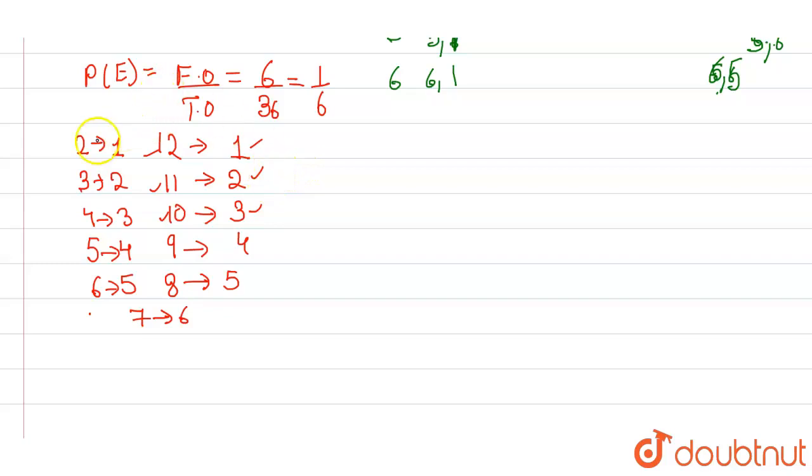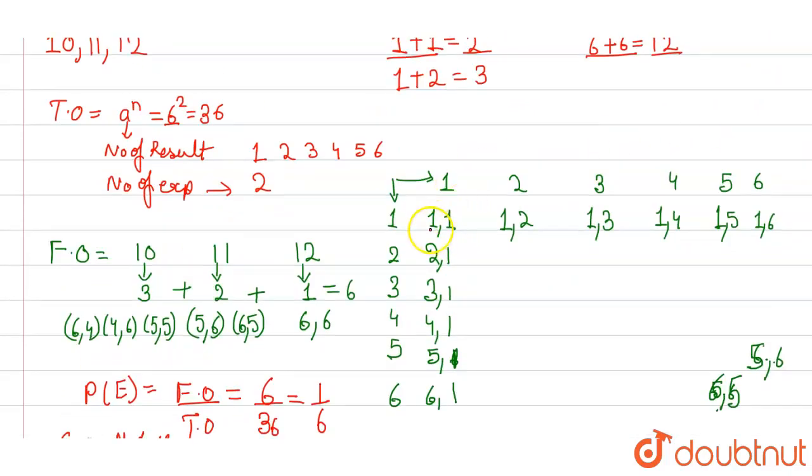So you can use this trick to remember. These are the sums and these are the number of cases which make this sum. If you want, you can check this. From (1,1), you will have one case for sum 2. For (6,6) giving 12, you will have one case. For sum 3, you have (1,2) and (2,1), two cases. For 11, same: (6,5) and (5,6), two cases. For sum 4, the cases are (3,1), (2,2), (1,3), three cases.